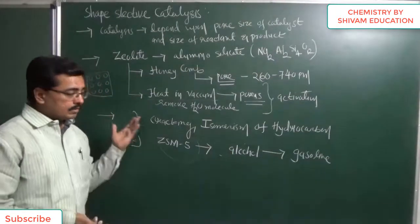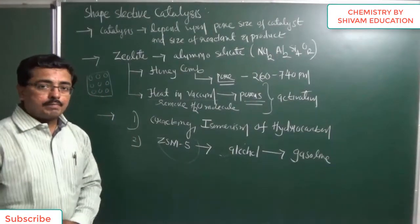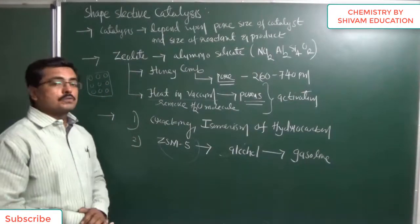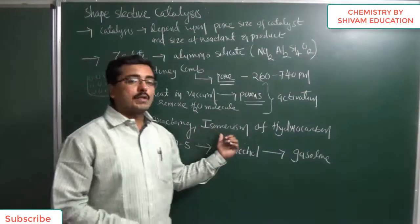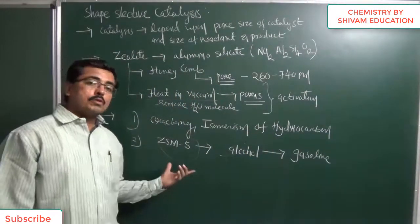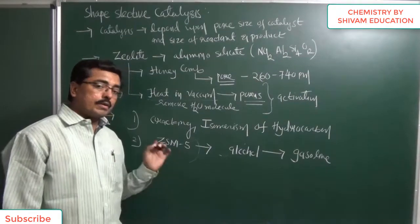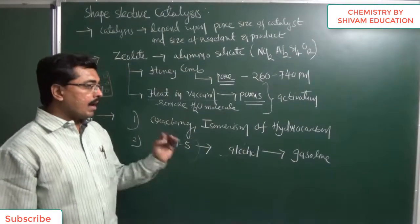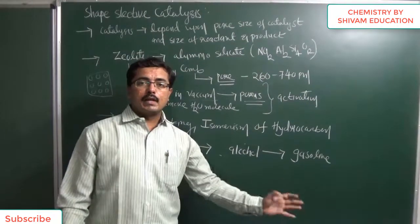This zeolite can be used for a variety of purposes. It is used for cracking as well as isomerization of hydrocarbons. One of the most important zeolites, ZSM-5, converts alcohol into gasoline in one step.